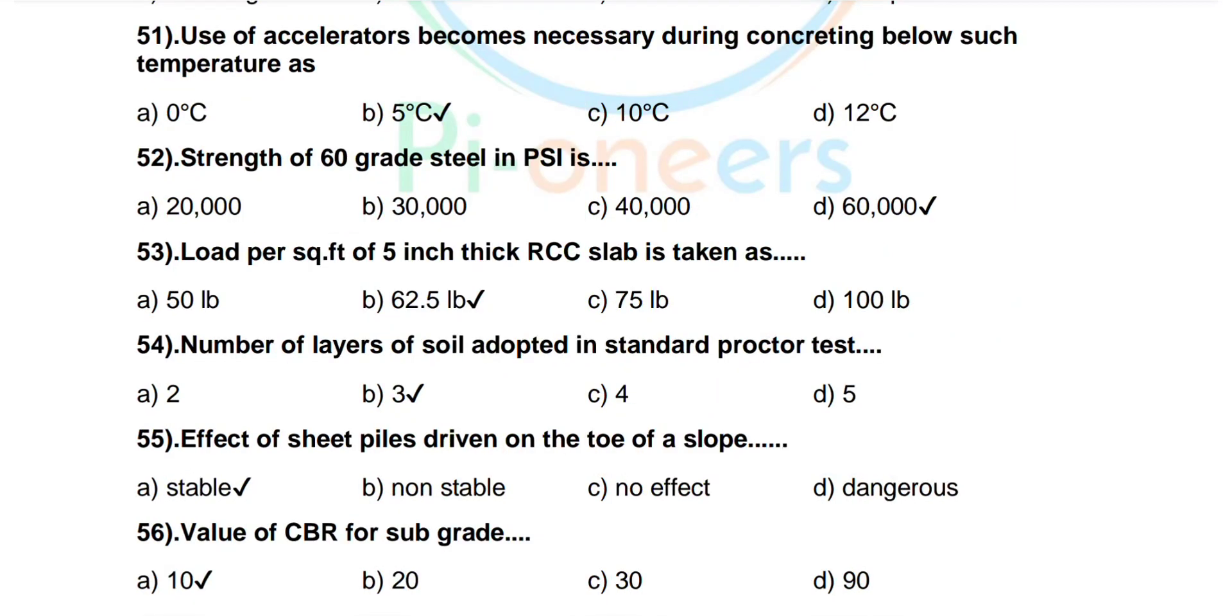Question number 54: Number of layers of soil adopted in standard proctor test. Options are 2, 3, 4, 5. Correct answer: 3.